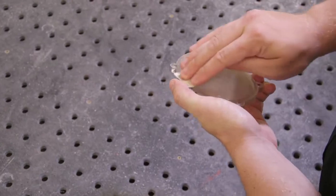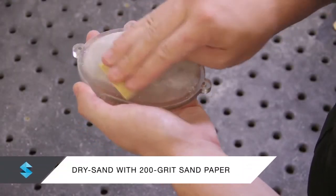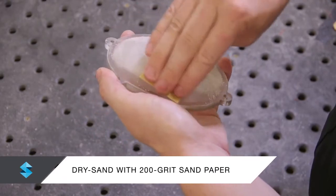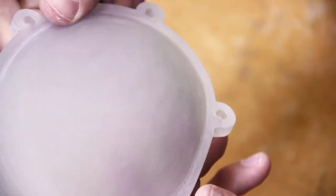To remove surface imperfections and unwanted layering, make sure that the model is completely dry and lightly sand all surfaces with 200 grit sandpaper. Dry sanding may leave scratches on the model.